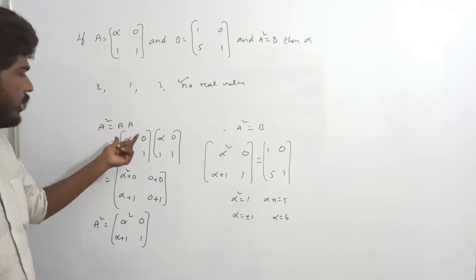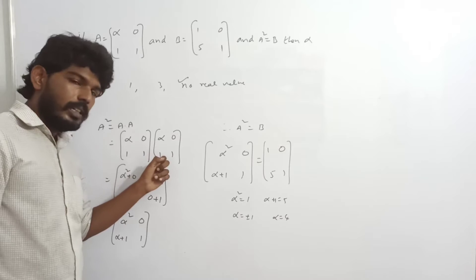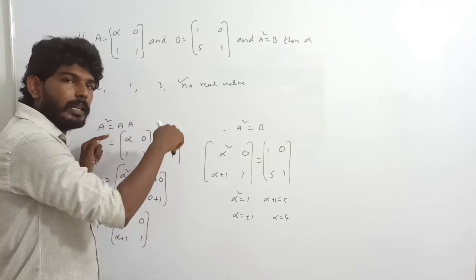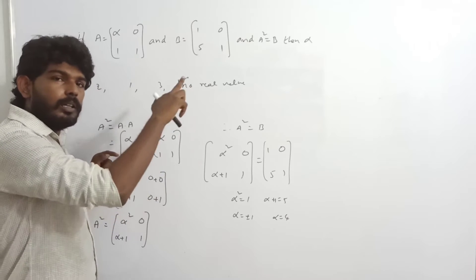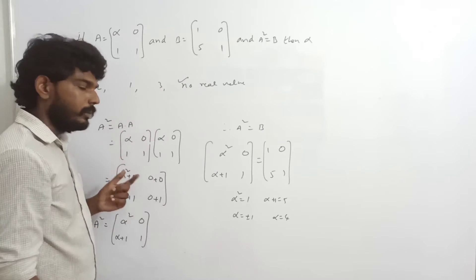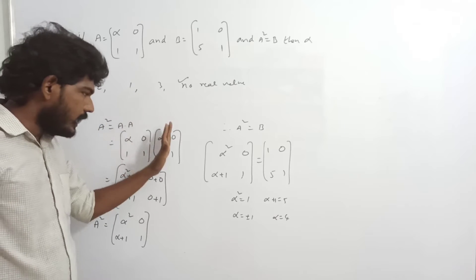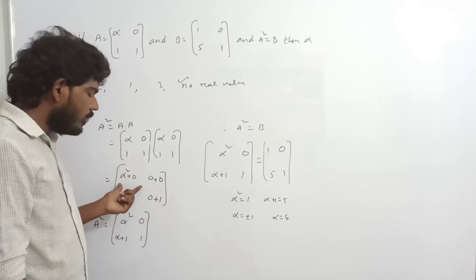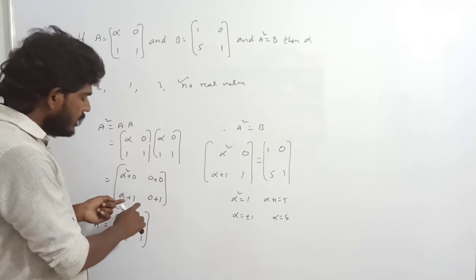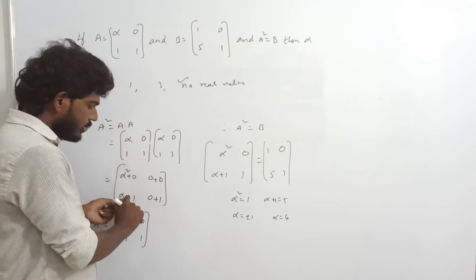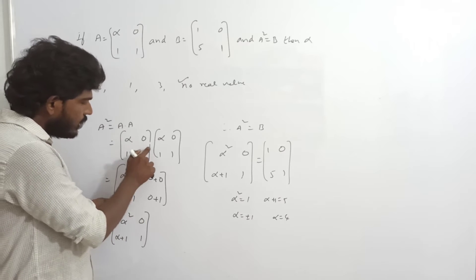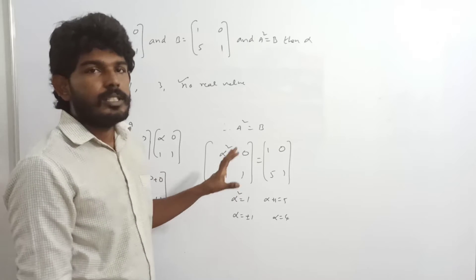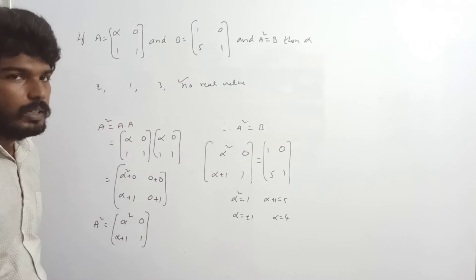So it means for no real value are these two equal. This is the concept of equality of matrices — row column, row column. Each element of the result uses row from the first matrix and column from the second matrix. Simple application.